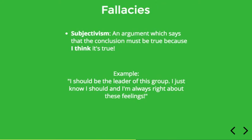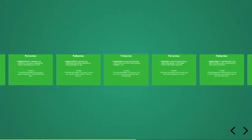Next, we have subjectivism. A subjectivist argument is basically one which says that the conclusion is true simply because I think it's true — it's totally subjective, whatever I say must be the case. For example: I should be the leader of this group — I just know I should and I'm always right about these feelings. This is clearly a fallacy because you can't know something like that to be true just because you feel that it's true. A good argument should provide objective, logical reasons. Let's pause here for a moment and return with some more fallacies.